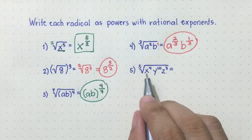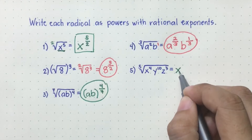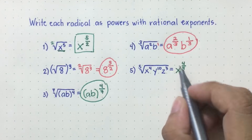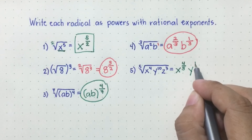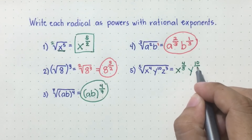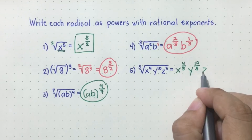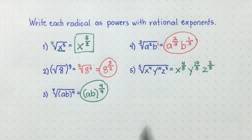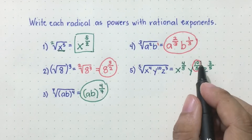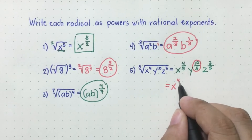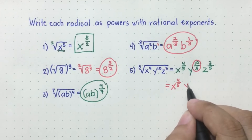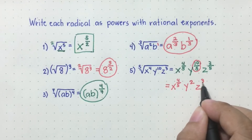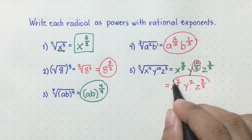How about this one? Let's start with x raised to four — that's the numerator — then the index is five, that will be the denominator. Followed by y raised to ten over the index, which is five. And z raised to three over the index, which is five. Now, as you can see, we can simplify ten over five. So we can rewrite this power as x raised to four-fifths, then y raised to ten over five, which simplifies to two, then z raised to three-fifths.